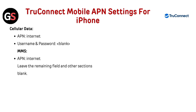True Connect Mobile APN settings for iPhone. Cellular Data APN: Internet. Username and Password: leave blank. MMS APN: Internet. Leave the remaining fields and other sections blank.